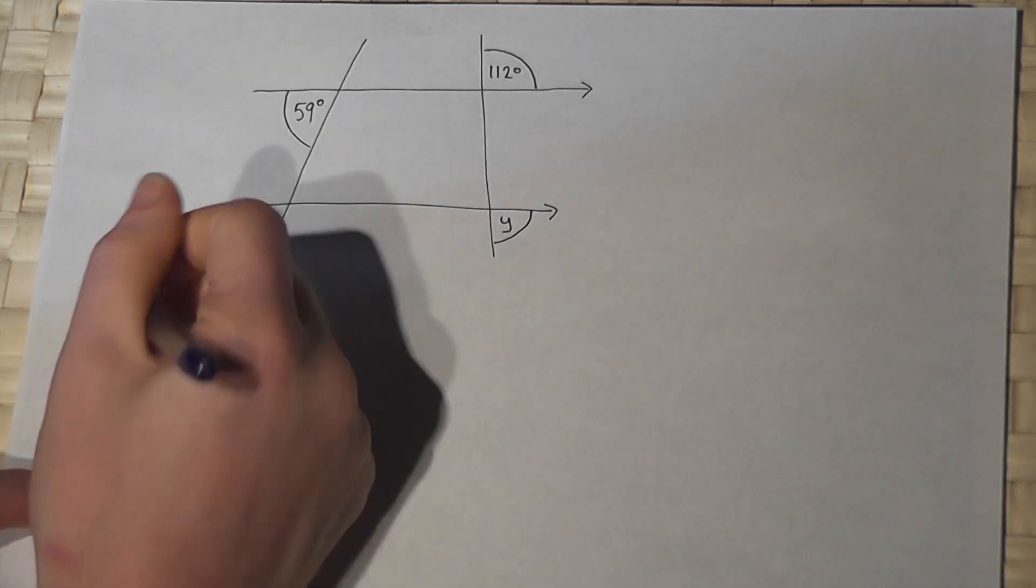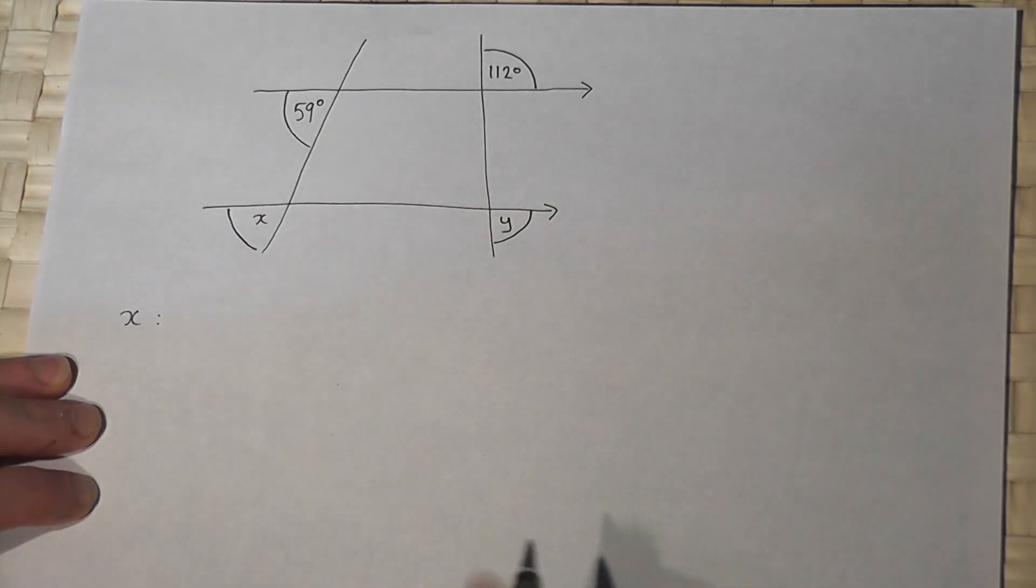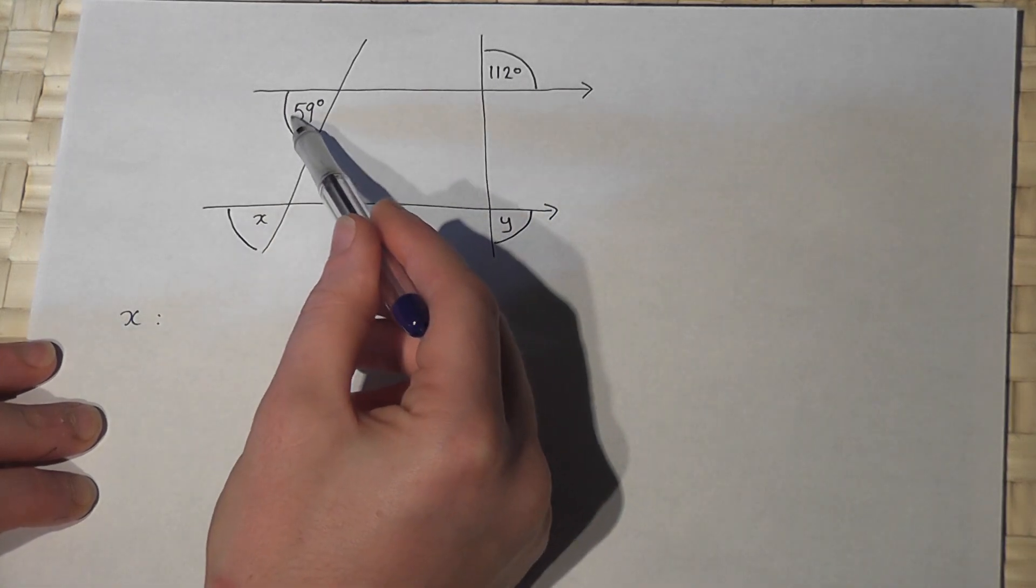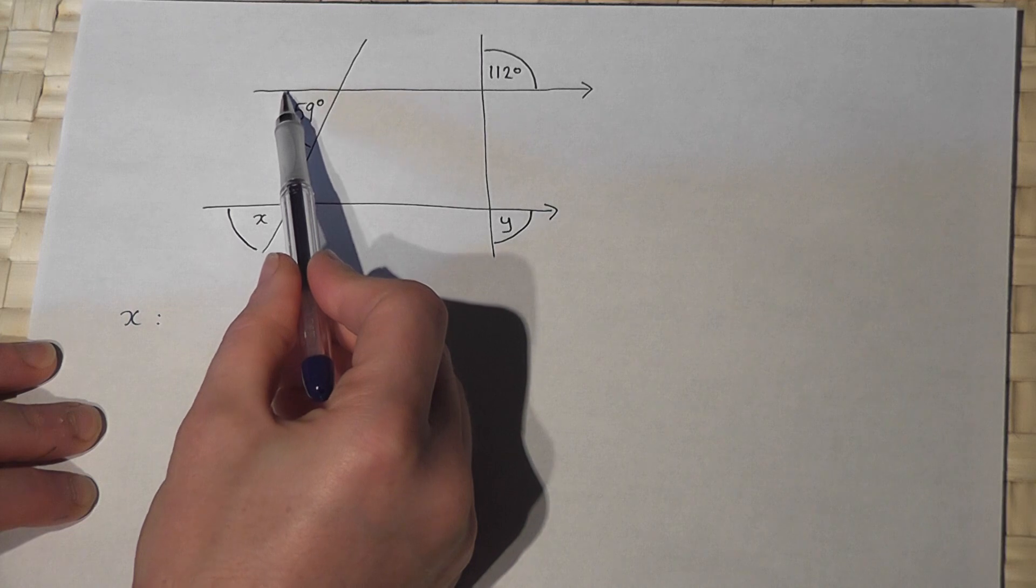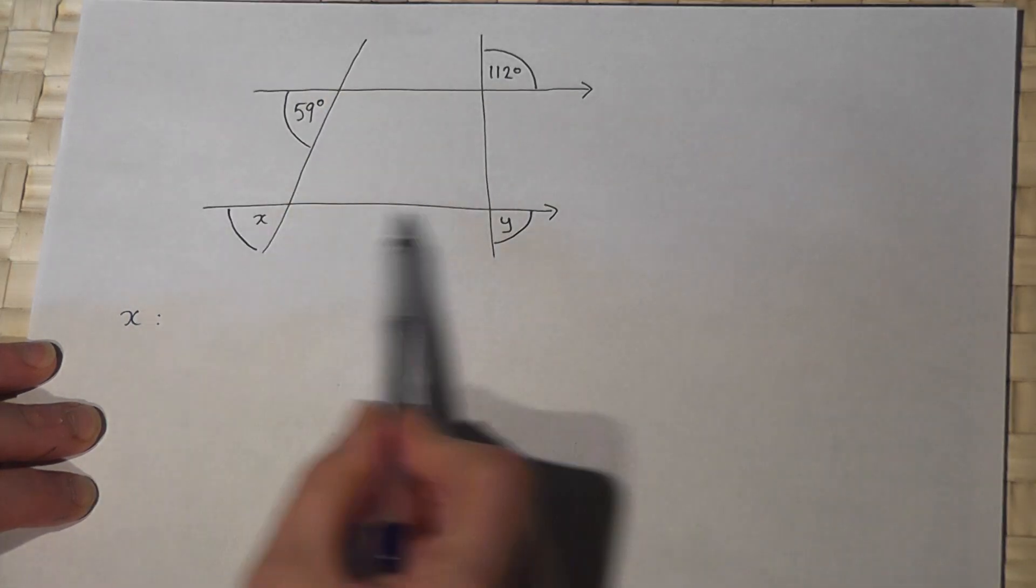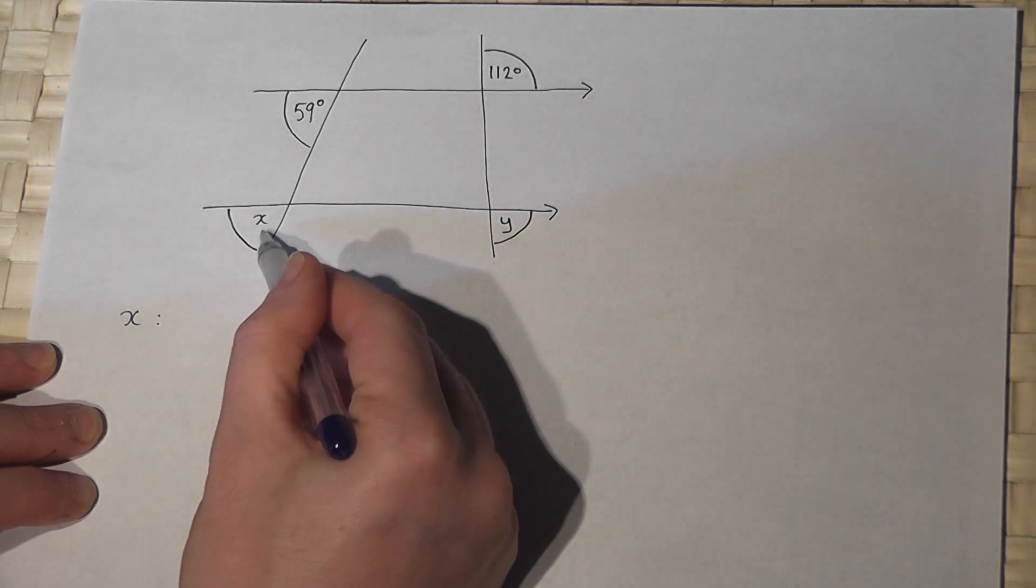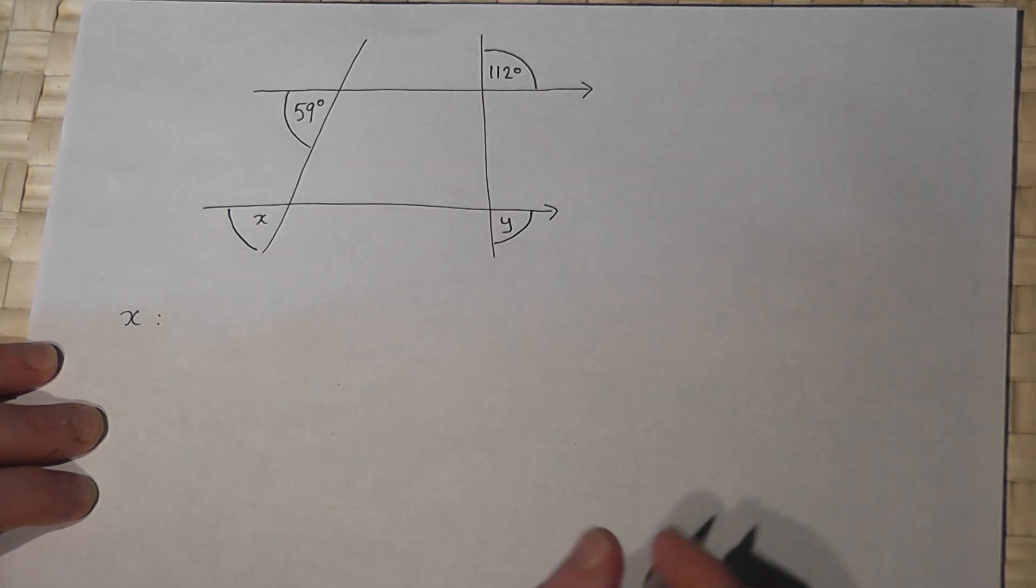Now then, to find angle X, observe how angle X is in the same position as angle 59. They're both just below the parallel lines and on the left. So therefore I know that X is the same as 59 because these two lines are parallel.